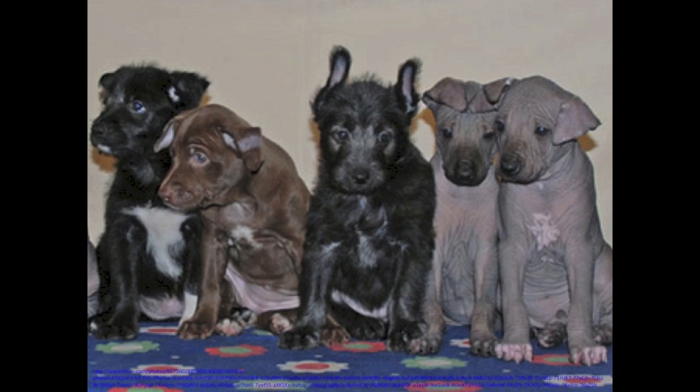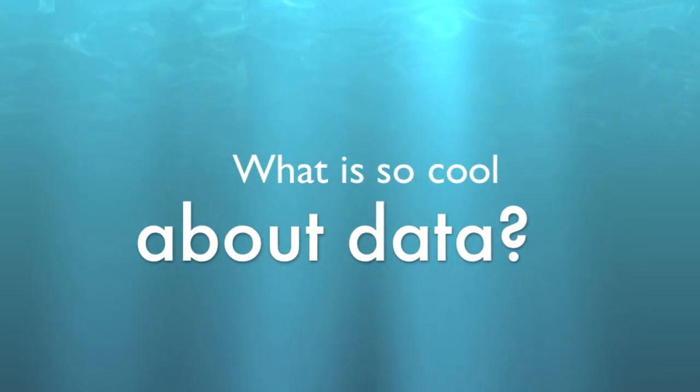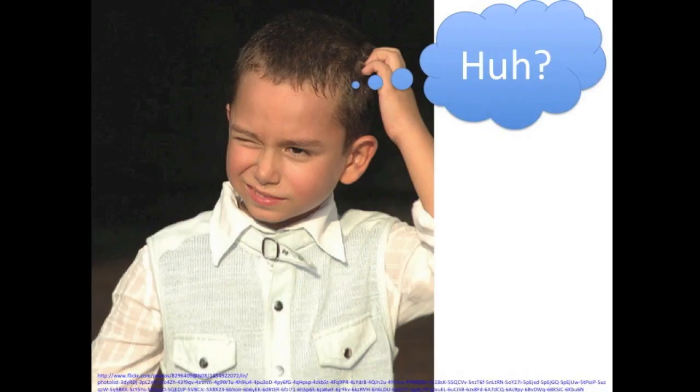Or how many black puppies are in this litter. Here is a picture of some of the stickers I have in my collection. Can you collect the data? Count how many dots I have of each color. I have one blue sticker, four red stickers, and three green stickers. Data helps you answer questions using numbers and facts.